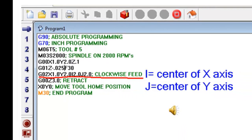Notice the line of code underlined in red. This line of code tells the machine to machine in a clockwise direction. I and J determine the center of both X and Y axis.